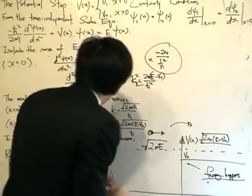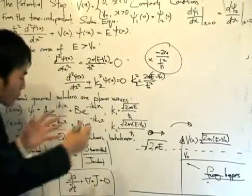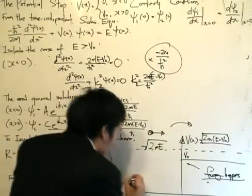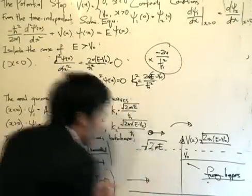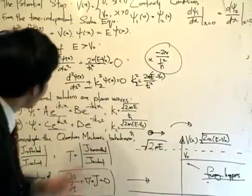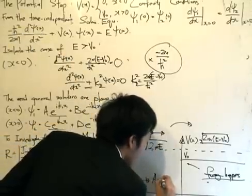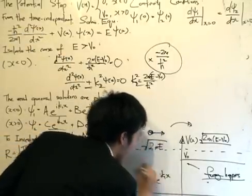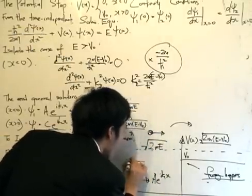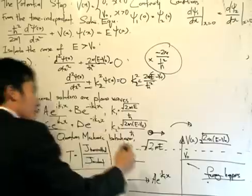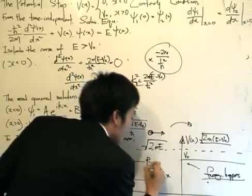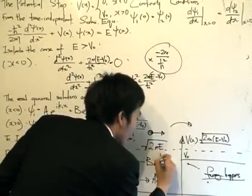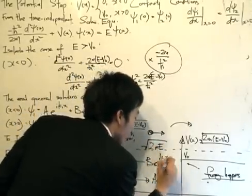Moving from the right to the left. So as you can see, if I were to draw it down here, the wave moving in this direction from left to right is given by A·e^(iK1X), and moving from right to left is given by B·e^(-iK1X).